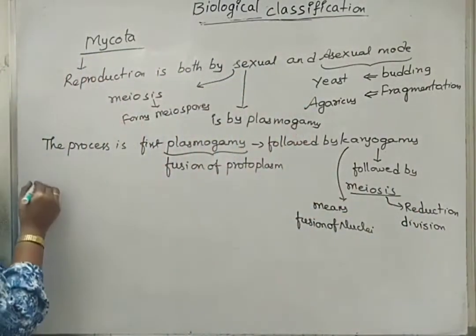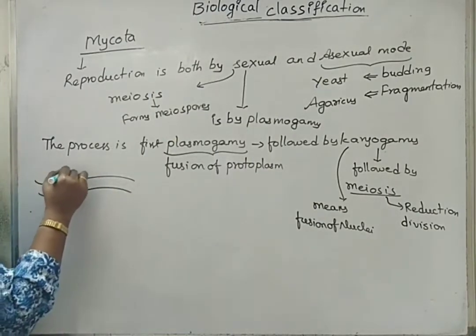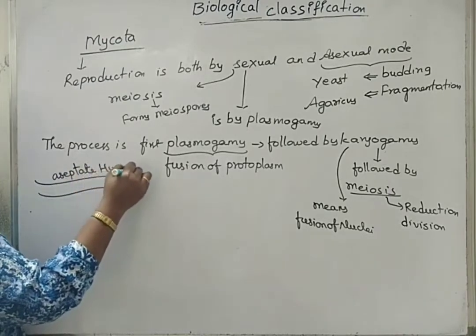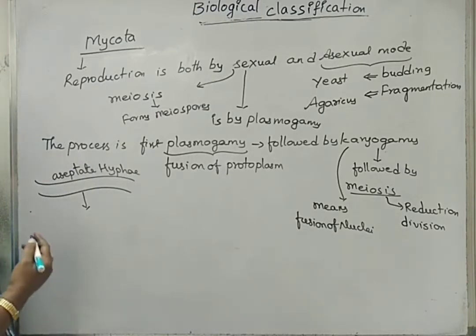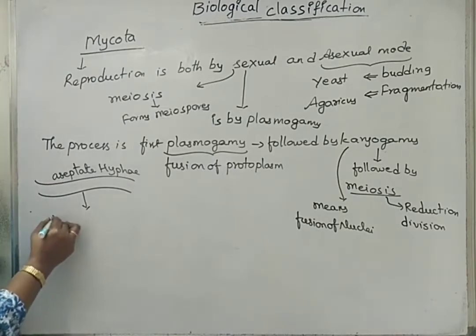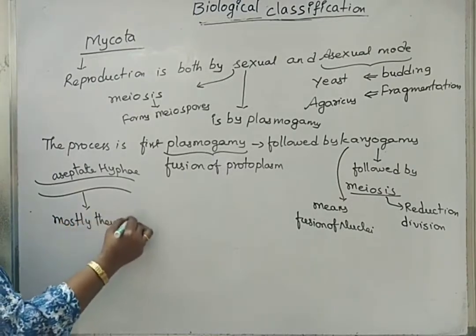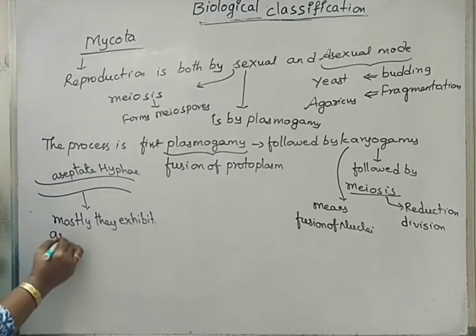We will see this diagrammatically. This is aseptate hyphae. This will give mostly asexual mode of reproduction by production of sporangiophores, chlamydophores, zoospores, etc. So mostly they exhibit asexual reproduction.